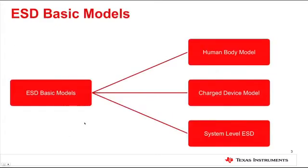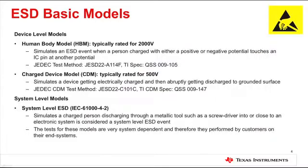We will look at the human body model, charge device model, and system level ESD. The human body model is typically rated for 2000 volts and it simulates an ESD event when a person charged with either a positive or a negative potential touches an IC pin at another potential.